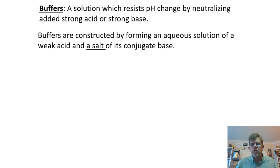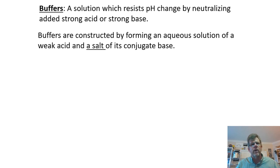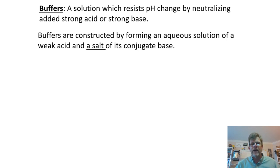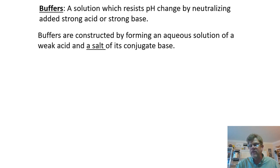In living systems, pH shocks are detrimental — they are life threatening. So much of living biochemistry is mediated by what are called buffers — natural buffers. Our bloodstream has a natural buffer in it, so any added acid or base does not give a pH shock to our bloodstream, but only ends up with little shifts in pH by comparison. By definition, a buffer is a solution which resists radical pH change by neutralizing added strong acid or strong base. There are hundreds of different types of buffers, but they're all constructed the same way: as an aqueous solution of a weak acid and the salt of that weak acid's conjugate base.